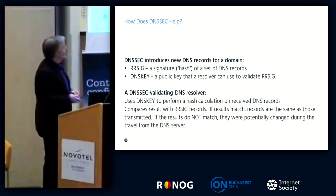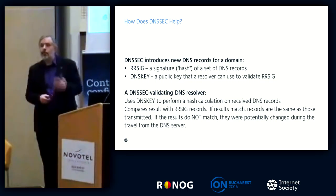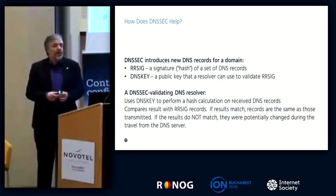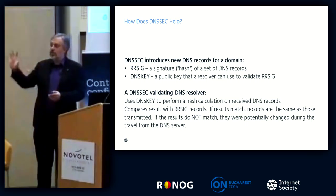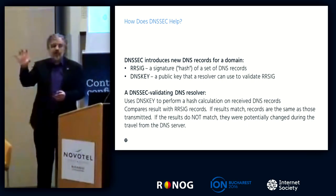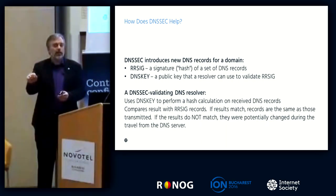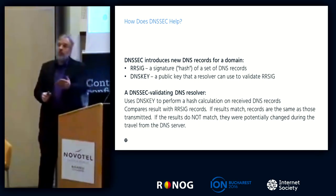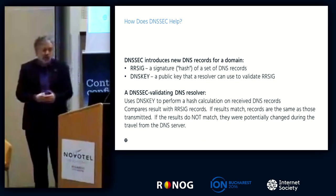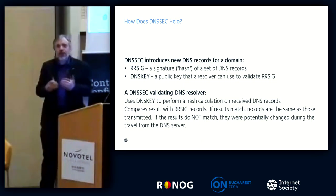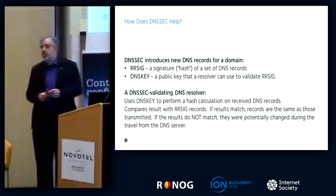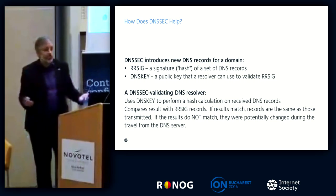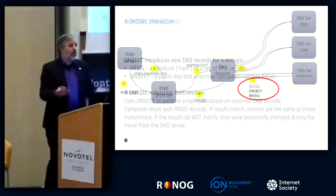What DNSSEC does is introduce a couple of new records — one called an RRsig and a DNS key. Basically, it signs the information in the DNS zone file and puts a signature on it saying this information is correct. Your resolver then checks, or validates, that information to see if the signature matches. If the signature matches correctly, the information is correct. If it doesn't work, something is wrong, and there's some error.